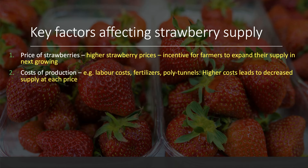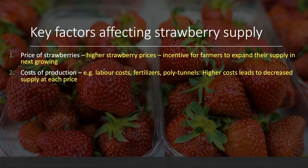The costs of production are key supply-side factors. Typically, when the costs of production go up, supply at a given price level goes down. For example, if labour costs become more expensive — perhaps a minimum wage increase — or if the cost of fertiliser increases, or the cost of maintaining polytunnels and ground sheets, those rising costs lead to a fall in supply at each price. The ability of producers to sell to the market at a given price will go down if costs go up.